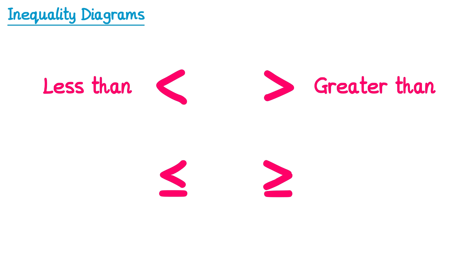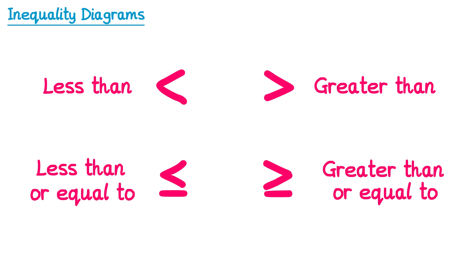Next we have these two symbols here, which look exactly the same apart from there's an extra line underneath them. The one on the left is like a less than symbol, but we would read it as less than or equal to. The one on the right is like a greater than symbol, but we'd read it as greater than or equal to.